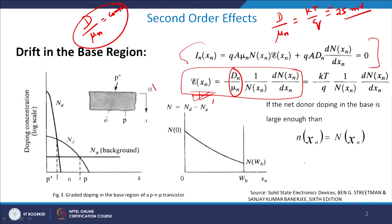The electric field also depends on the number of dopant species available at a particular point E(XN) within the network. If that number is very large, the absolute value of the electric field will be falling. In the base region, even a small change in ND will produce a drift in the base region — electrons will be drifted through the base region. That is quite an interesting phenomenon.